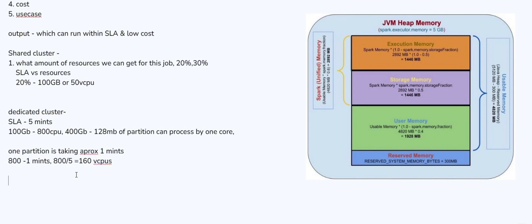We can also see how to optimize further. One way is to increase the partition size. Since the dedicated cluster mostly works in a cloud environment, and the data is available in one particular S3 bucket, there isn't much requirement to move data around as in an HDFS cluster. So we can increase the partition size from 128 MB to 256 MB — doubling it. The partition count then reduces from 800 to 400 because we doubled the partition size.